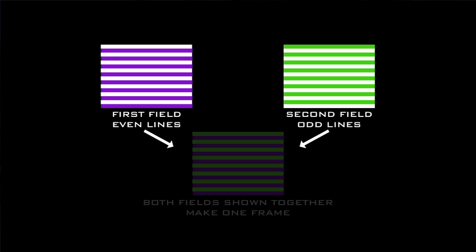It's a lot different than interlaced footage where you have odd and even fields that help blend your footage together, and you're able to shoot at frame rates up to like 1/1000 or 1/2000 — whatever you want to film at. With progressive footage you need to film at a lower shutter speed so you get a little bit of motion blur that helps blend your footage.